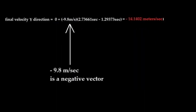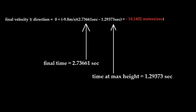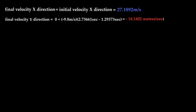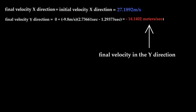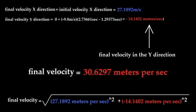Minus 9.8 meters per second squared is of course a negative vector. We have already calculated final time and time at maximum height. We plug in these values and find that the final velocity in the Y direction is equal to minus 14.1402 meters per second. This makes sense because the object is traveling at a negative vector. Now that we have the final velocity in the Y direction, we plug it into the final velocity equation and find that the final velocity is equal to 30.6297 meters per second.